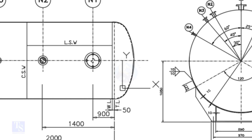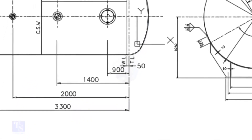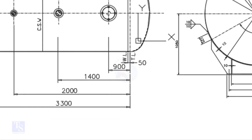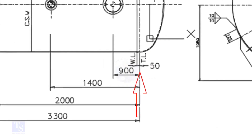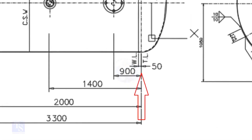In this drawing, the nozzle center distance is starting from the TL. In some drawings, you may see the nozzle center is given from the WL, so before starting the marking, carefully check these things.